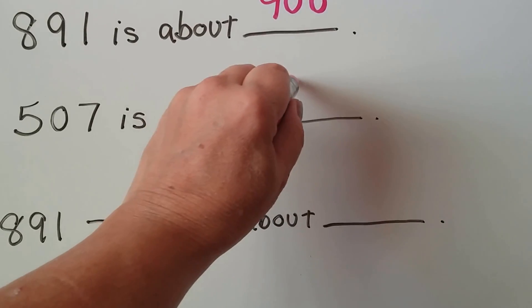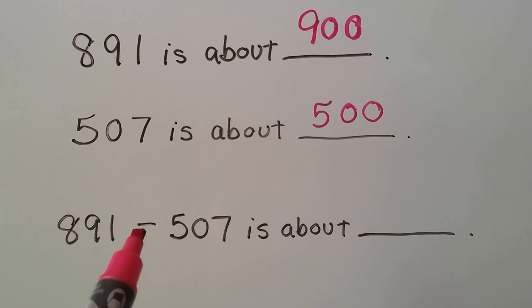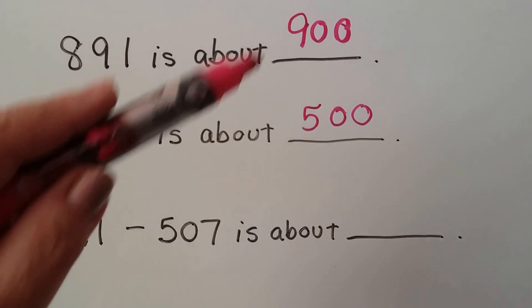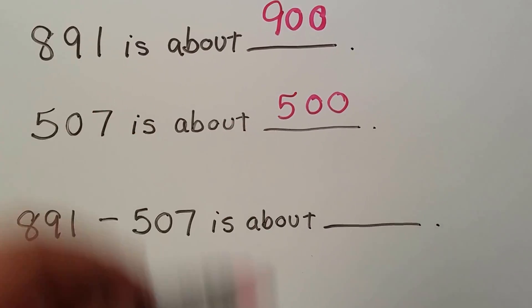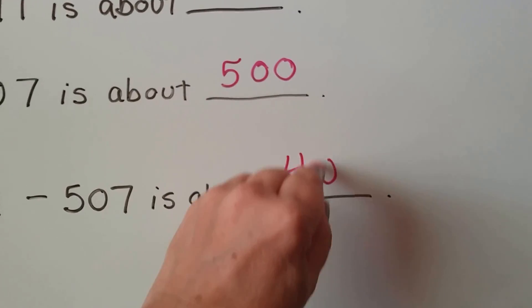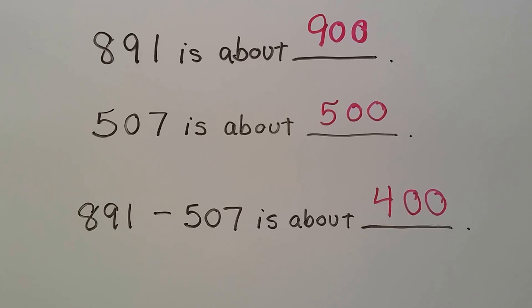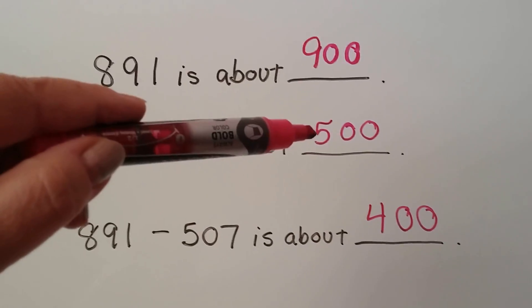So 891 minus 507 is about how much? Remember this is subtraction. If we have 9 minus 5, well that would be 4, and then we put our two zeros. We learned how to do that, right? Subtracting hundreds is the same thing as subtracting ones, it just has a couple zeros at the end.